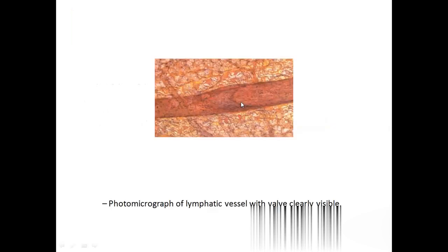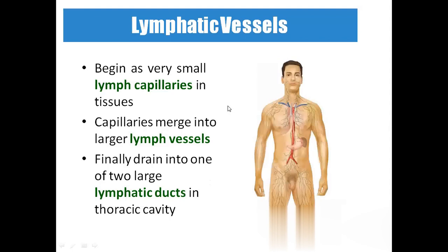This is the real picture of the lymphatic vessel showing the lymphatic wall. The lymphatic vessels start as very small vessels called lymph capillaries. All the small lymph capillaries merge to form lymphatic vessels and finally drain into a larger tube called lymphatic ducts, ending in the thoracic cavity and draining into the inferior vena cava.